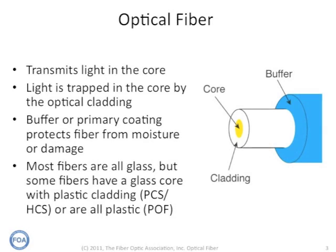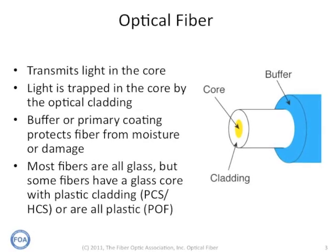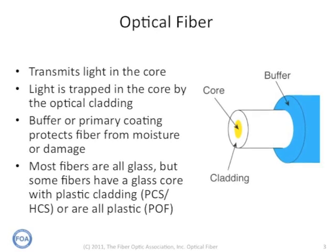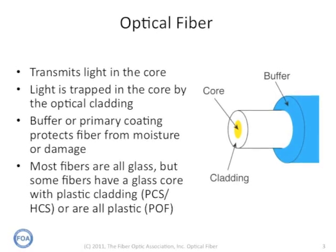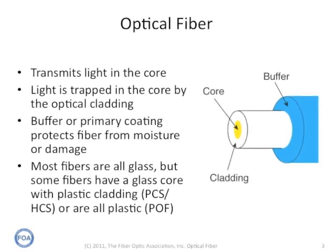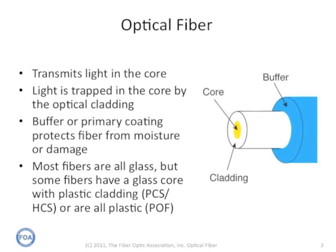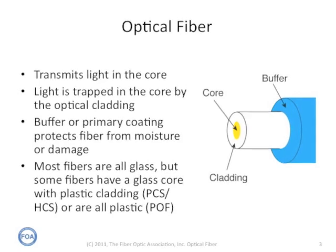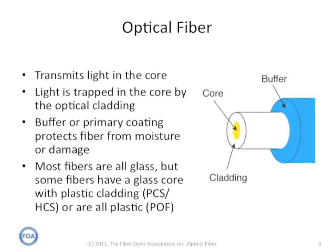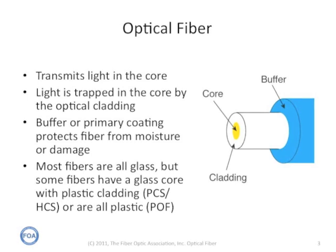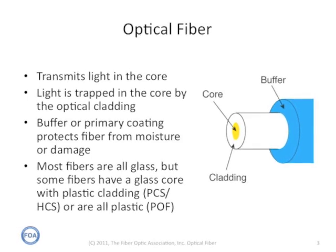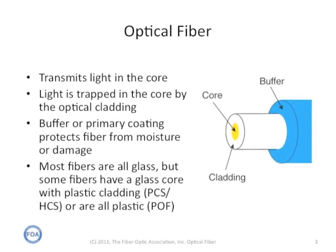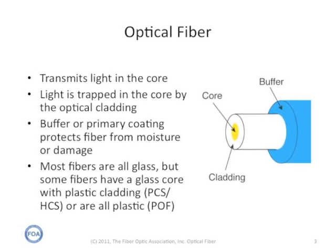Within the optical fiber, the light is transmitted in the core. It's trapped in the core by the optical cladding that surrounds it. On top of that, there's a buffer or primary coating made out of usually an acrylic plastic that protects the fiber from moisture or damage. This is what we strip off when we prepare the fiber for termination or splicing. Most fibers are all glass, but some fibers have a glass core and a plastic cladding, and some are all plastic — the ones we call POF.